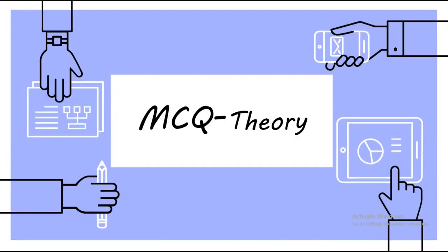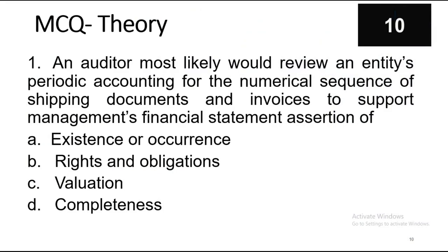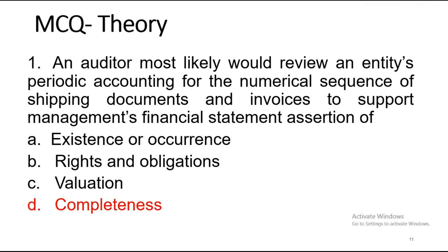Now let's try multiple choice theory. Question one: an auditor most likely would review an entity's periodic accounting for the numerical sequence of shipping documents and invoices to support management's financial statement assertion of: A) existence or occurrence, B) rights and obligations, C) valuation, or D) completeness. The correct answer is letter D, completeness — because you are verifying completeness assertion with the use of numerical sequence.